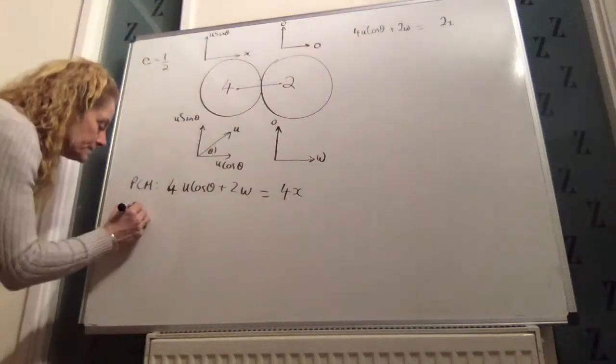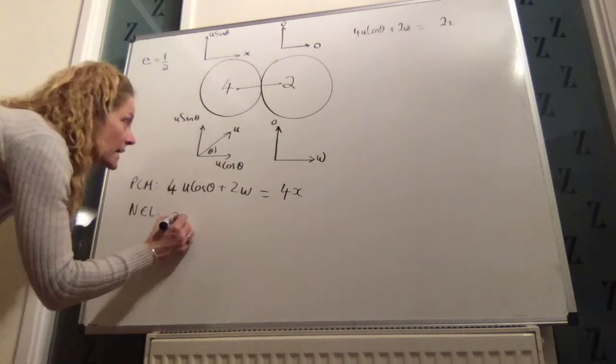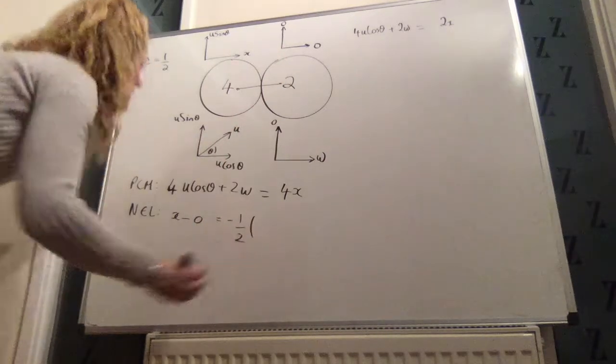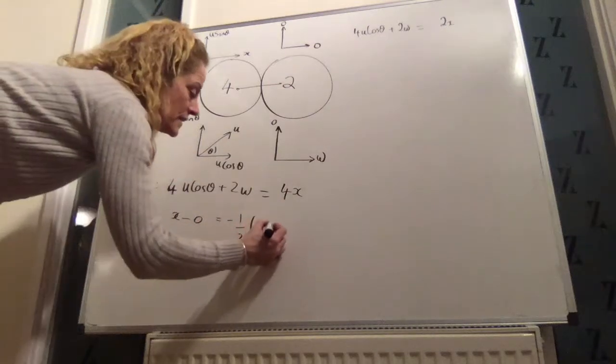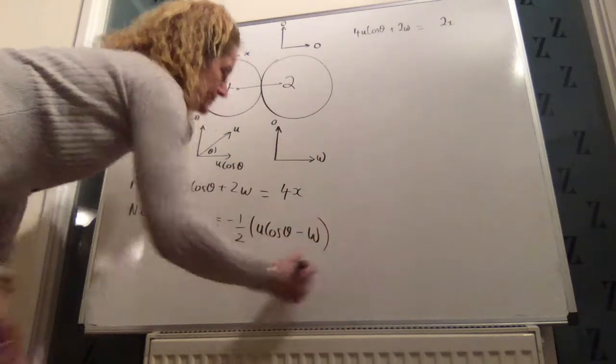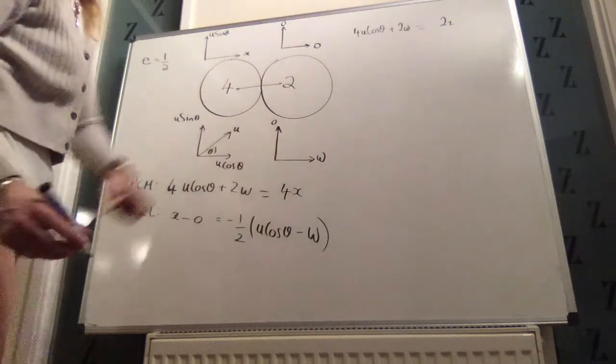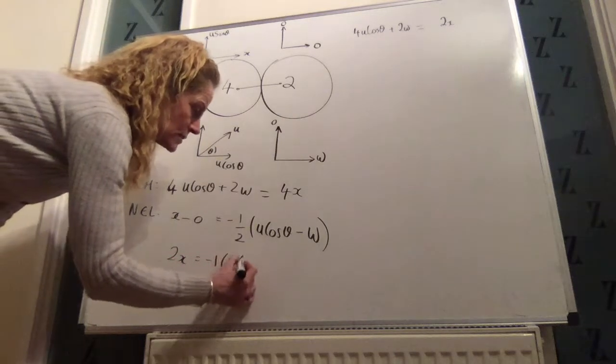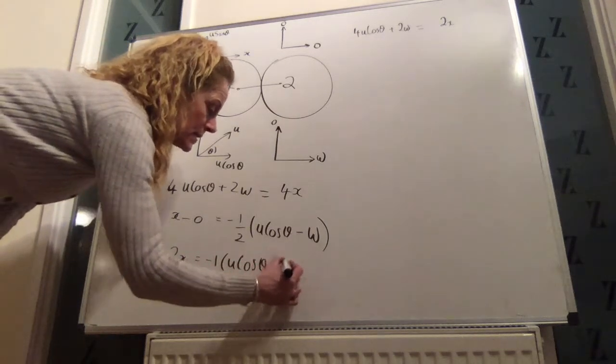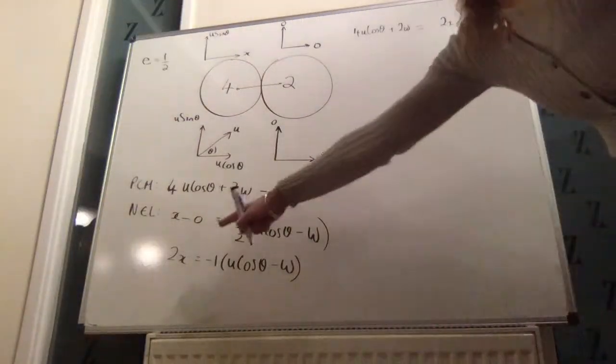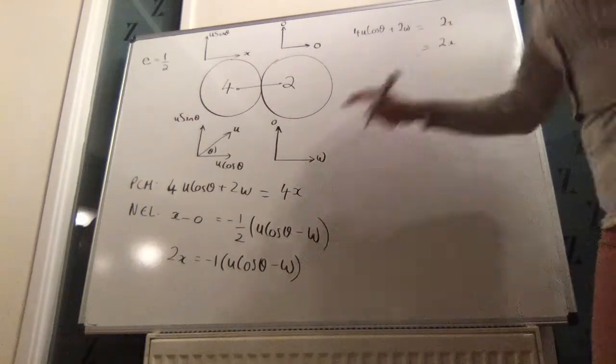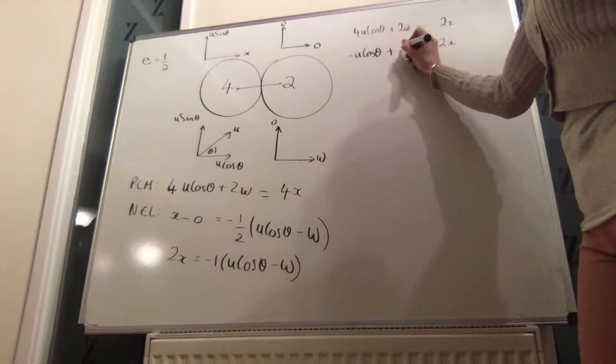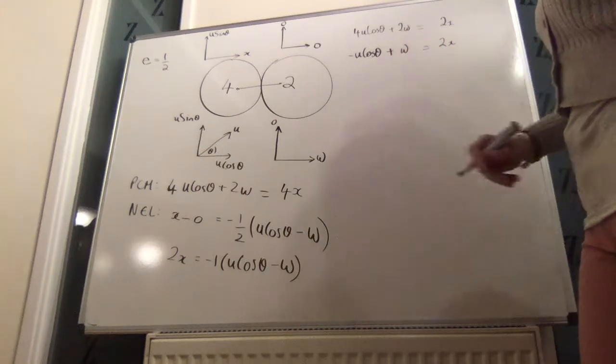Newton's experimental law. So, x minus 0 is equal to minus e times u cosine theta minus w. That minus that equals minus e times that minus that. Multiply across by 2. 2x is equal to minus 1 times u cosine theta minus w. Or 2x is equal to minus u cosine theta plus w.